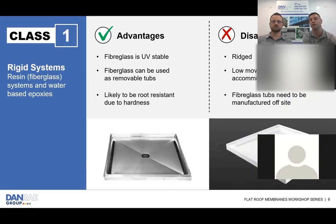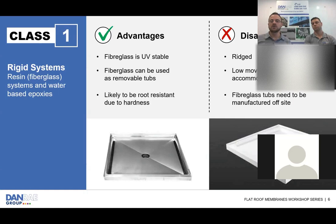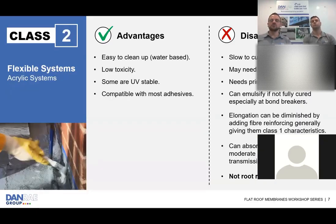Specifically with roofing, Class 1 wouldn't generally be used because it's a rigid system. You'd typically see Class 1 as pre-formed shower trays or epoxy membranes. You might see epoxy used on balconies as a moisture barrier over screed, but generally not on roofing. The advantages are they're quite resistant and last a while; the disadvantage is they're very rigid.